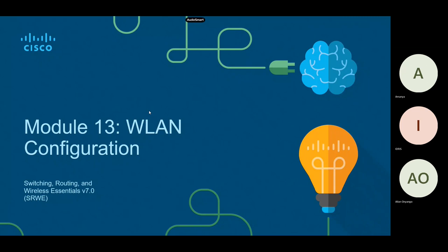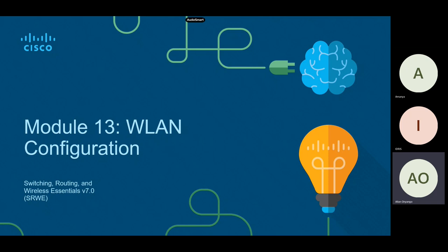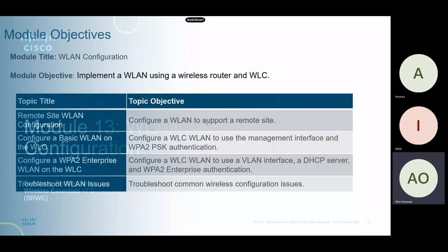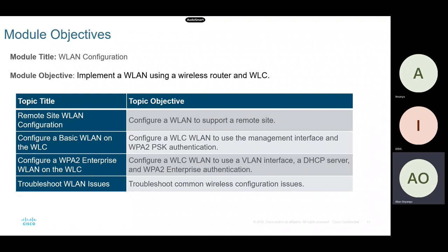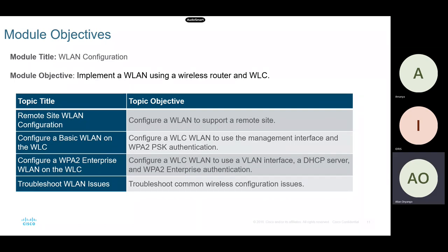We are going to have a class on WLAN configuration — a wireless local network configuration for learning purposes. The objective for today is to implement a wireless local network using a wireless router and a wireless LAN controller, configure it to support a remote site, configure WLC VLAN to use the management interface and WPA2 pre-shared key authentication.